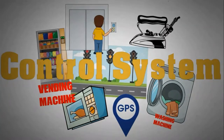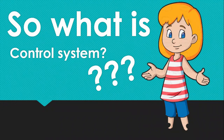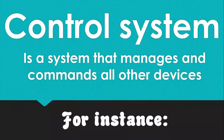So what is a control system? A control system is a system that manages and commands all other devices.